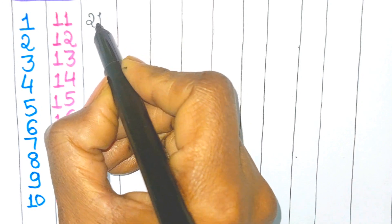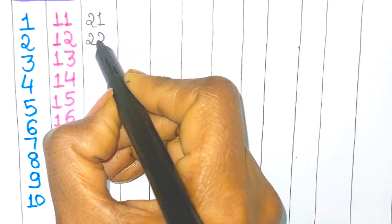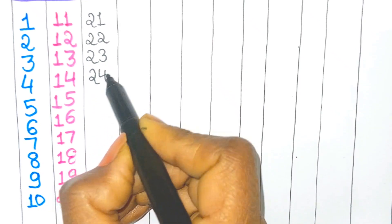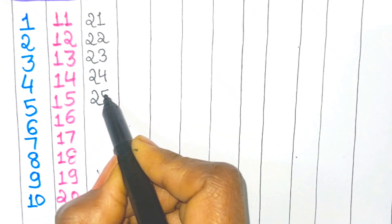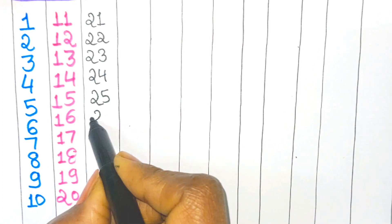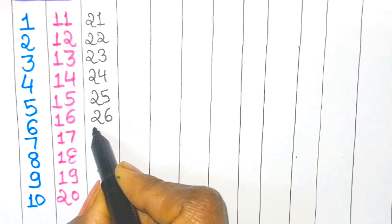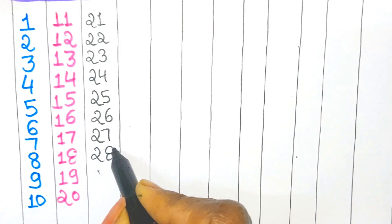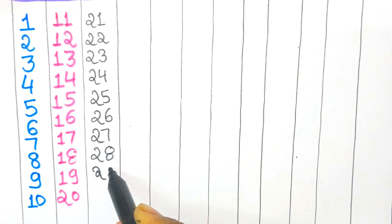Two one - twenty one, two two - twenty two, two three - twenty three, two four - twenty four, two five - twenty five, two six - twenty six, two seven - twenty seven, two eight - twenty eight, two nine - twenty nine, three zero - thirty.